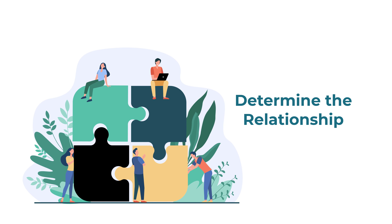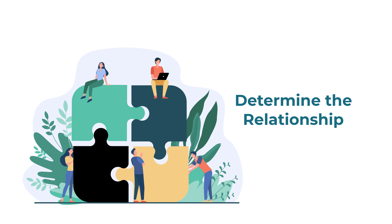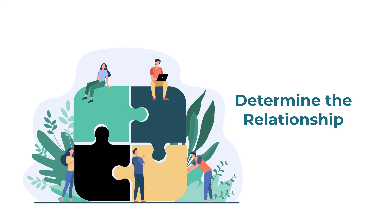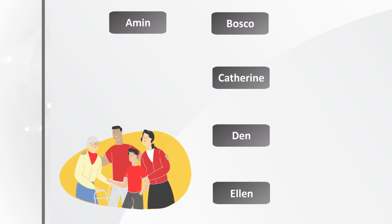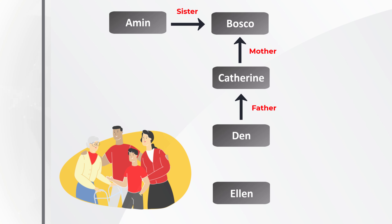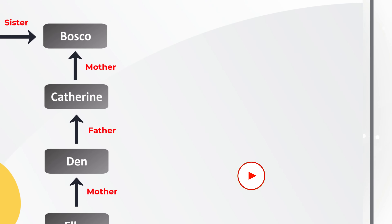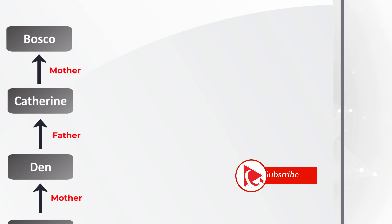The easiest way to determine this multigenerational relationship in the family is to build a diagram. Let's do it one step at a time. Amin is Baska's sister. Catherine is Baska's mother. Dan is Catherine's father. And Alan is Dan's mother.